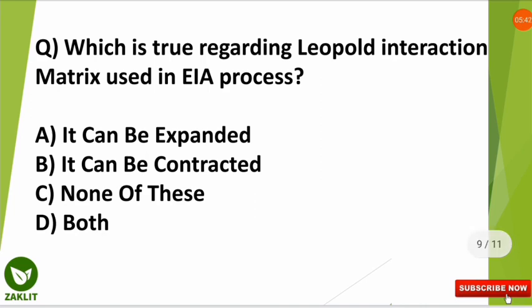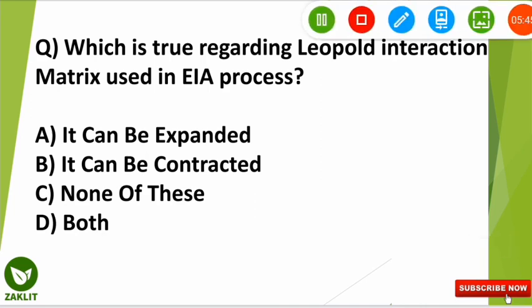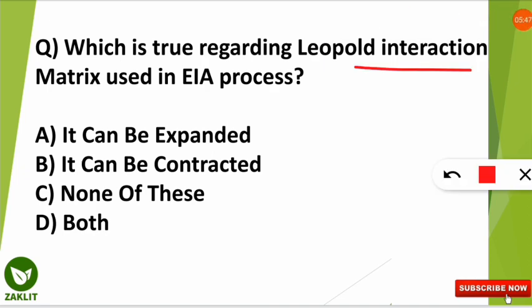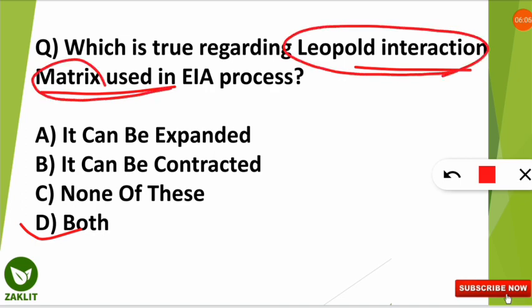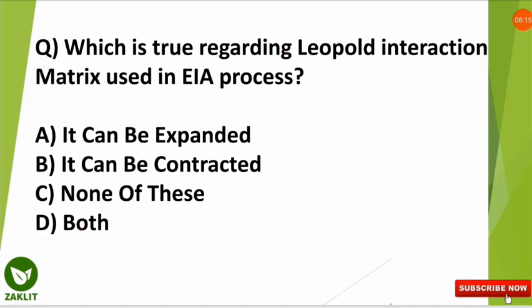The next question is: which statement is true regarding the Leopold Interaction Matrix used in the EIA process? The correct option is D — both statements are true. The Leopold Interaction Matrix is very flexible because it can be both expanded and contracted, which makes it very helpful in the EIA process.